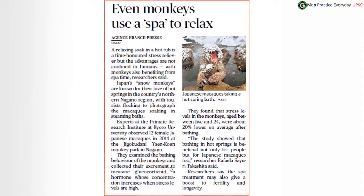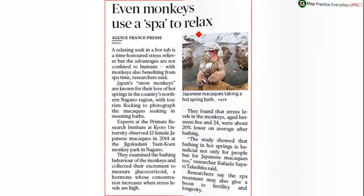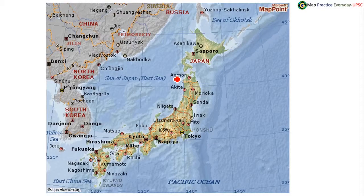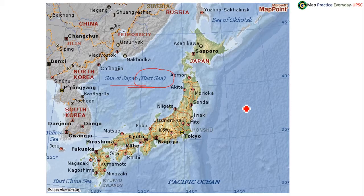In Japan, monkeys love diving into hot steam pools provided artificially in winter. Japan's map shows the Sea of Japan — also called the East Sea — to the west. East China Sea is towards the southwest of Japan, and the Pacific Ocean is to the east. Japan almost lies inside the Pacific Ocean. The Korea Strait exists between South Korea and Japan. The capital city of Japan is Tokyo, located in the eastern part of Japan.